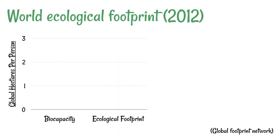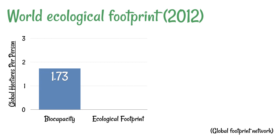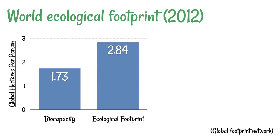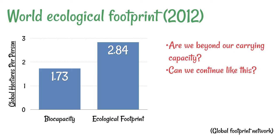According to the Global Footprint Network, the biocapacity of Earth is 1.73 global hectares per person — basically that's how large an ecological footprint every person on Earth can sustainably have. The actual ecological footprint that each person takes is more like 2.84. So this begs the question: are we beyond our carrying capacity? Can we continue on like this? Are we living unsustainably? And yes, these numbers do suggest that we are taking more than the Earth can possibly give.